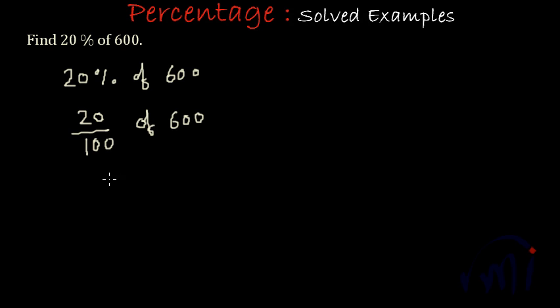And this will be written as 20 by 100 times 600. This fraction actually denotes the part of a whole. And in the same ratio, we have to find the value out of 600. So, it will be 20 by 100 multiplied by 600. We replace of by a multiplication sign. And then we will solve this expression further.